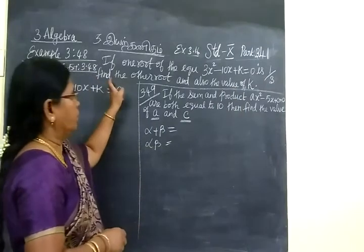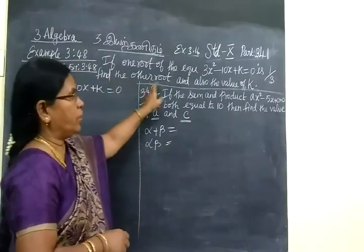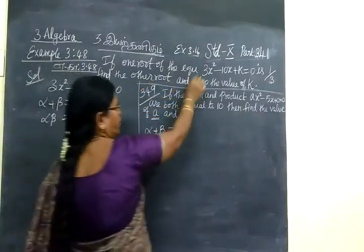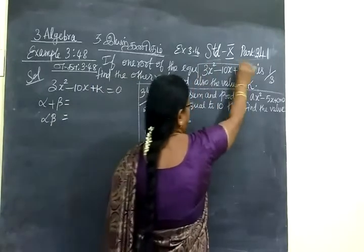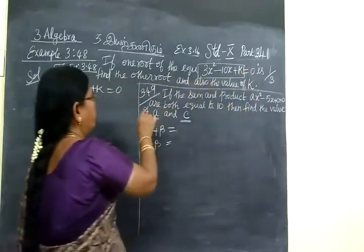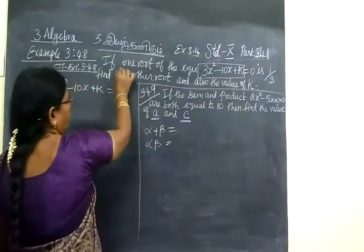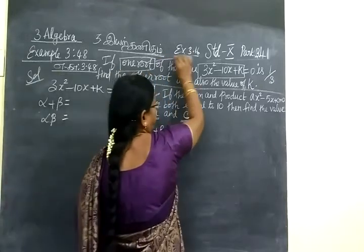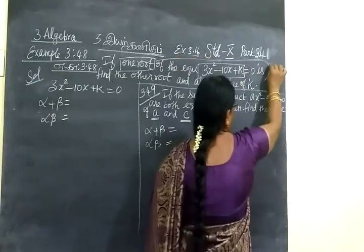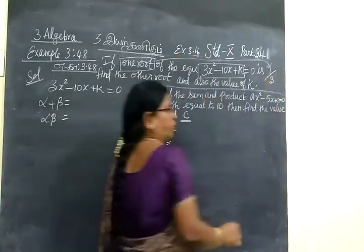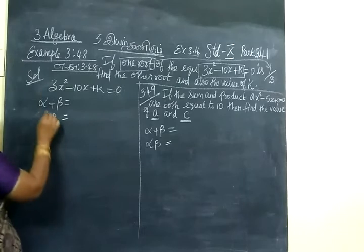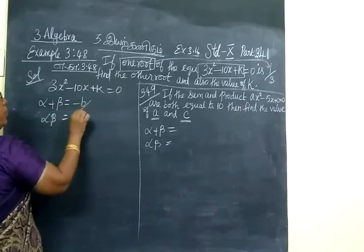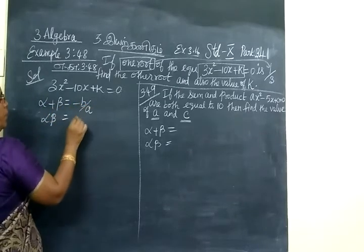you have to find the other root and also find the value of k. This is a quadratic equation. The quadratic equation will have one root given as 1/3. One root means alpha. Now alpha plus beta equals minus b by a.